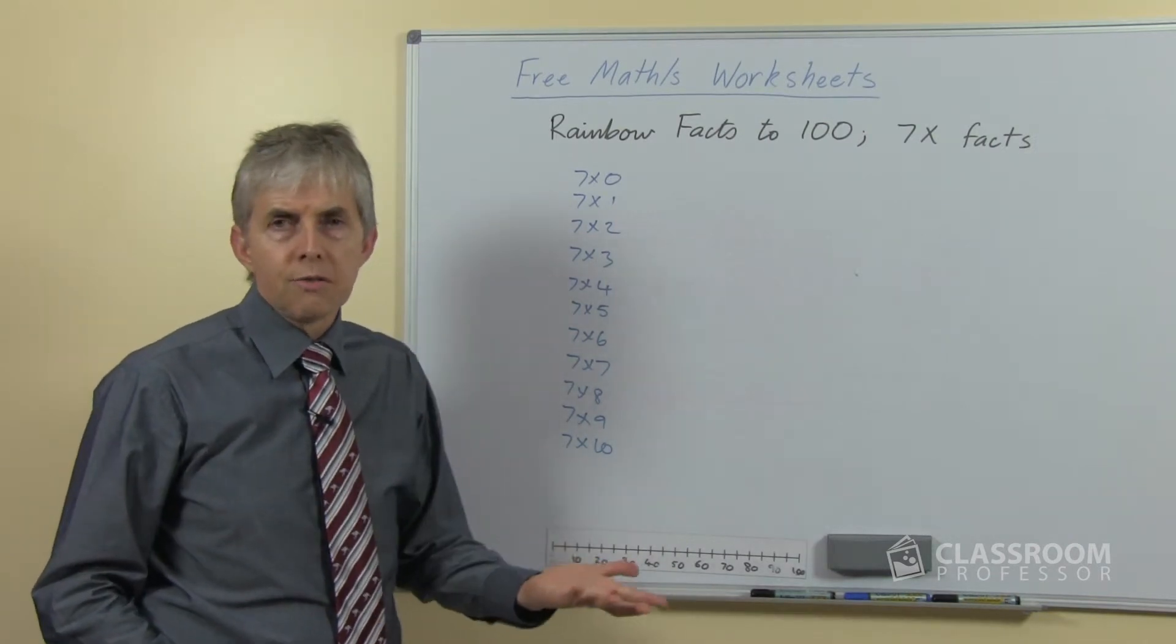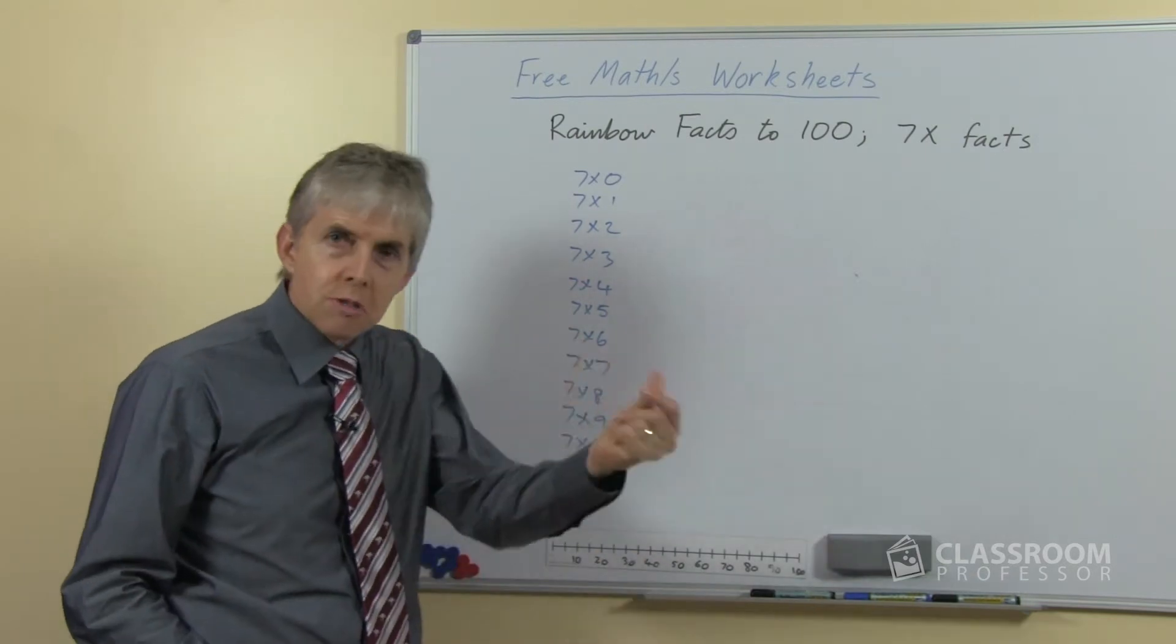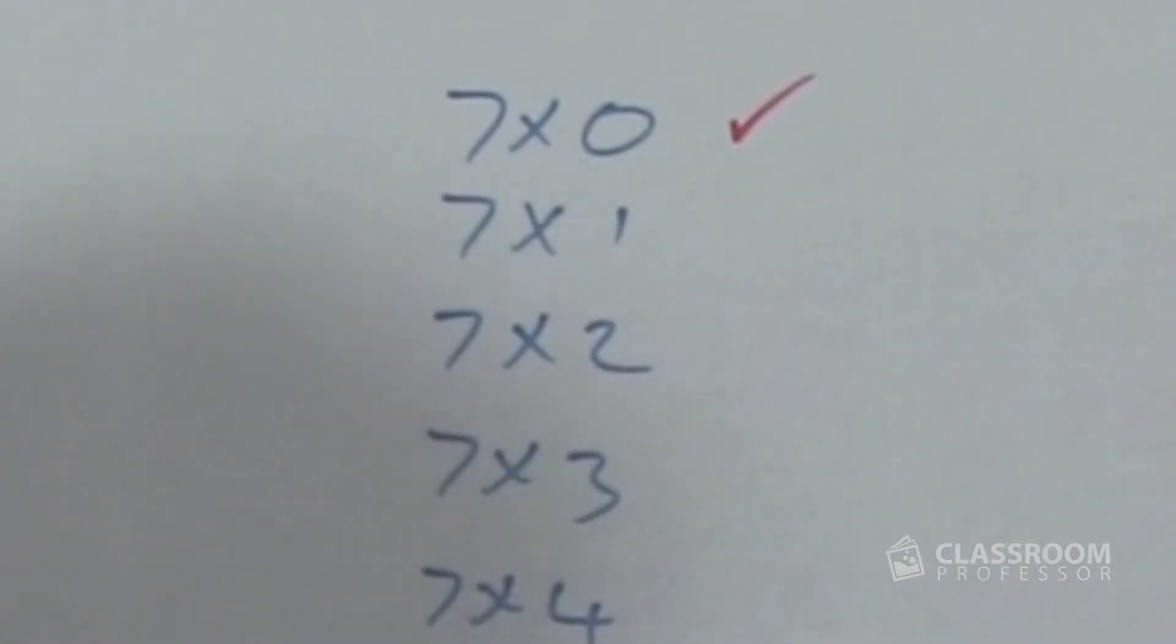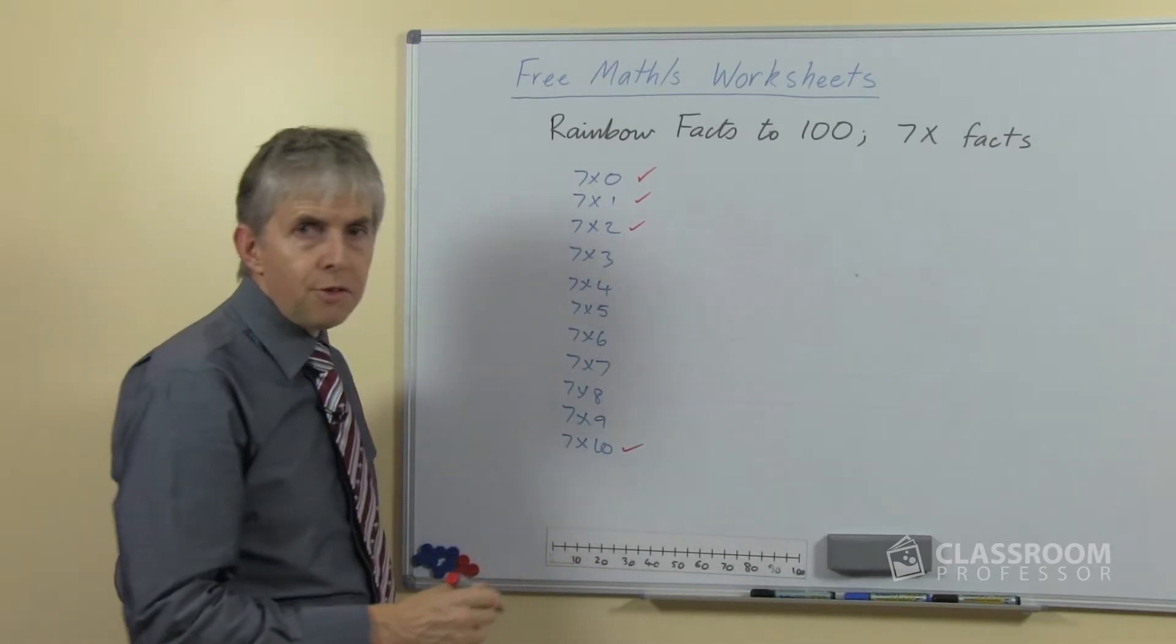We could ask the students which ones do you find easy, you know, tell me ones that you already know, the ones that you just straight off the top of your head you know what they are. Well seven zeroes is nice and easy, that's going to be zero. Seven ones are seven, seven twos are fourteen, seven tens are seventy. So there's a few knocked off.